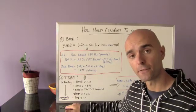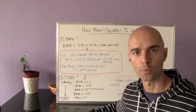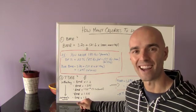At the very bottom, the fifth level is extremely active. This is somebody who's training perhaps twice a day, six times a week. This would be more of a professional athlete. In that case, we'd multiply their basal metabolic rate by 1.9.